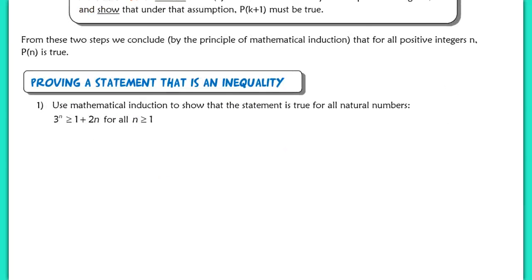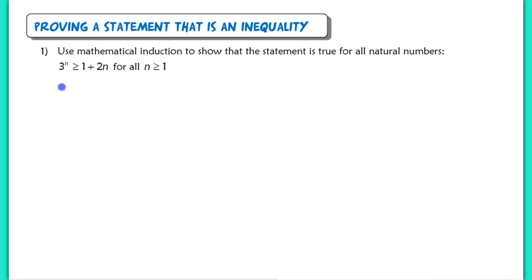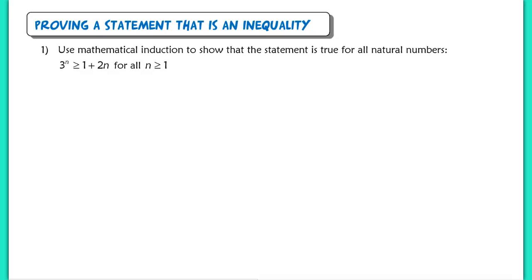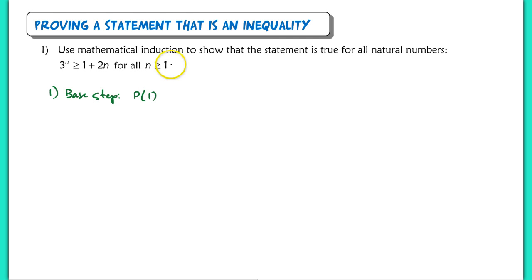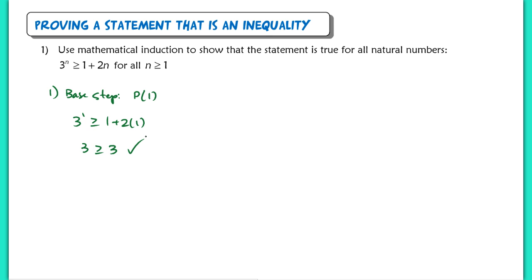Let's start here with our first problem. The directions for proving using Mathematical Induction — the concept doesn't change, and neither does the way you prove this. You're still going to start with your base case. My base step here is to show that P(1) is true. This is for n greater than or equal to 1, so plugging in: 3 to the first is greater than or equal to 1 plus 2 times 1. This is clearly a true statement, so I can get started on my inductive step.